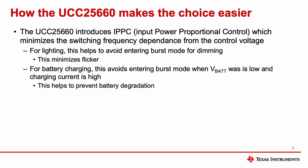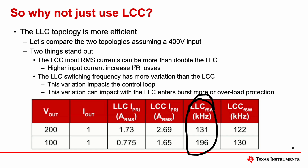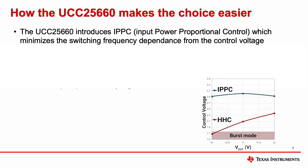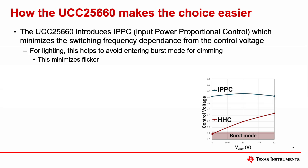The LLC switching frequency also has more variation than the LCC. This variation impacts the control loop and makes it harder to control when it goes into burst mode or into overload power protection. The new UCC25660 makes the choice easier because it introduces a new concept called IPPC, or input power proportional control, which removes the dependence on the switching frequency from the control voltage.